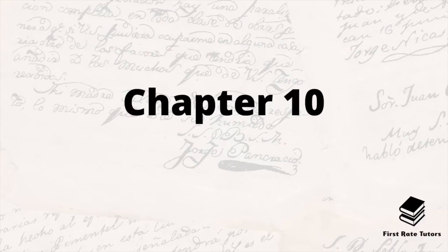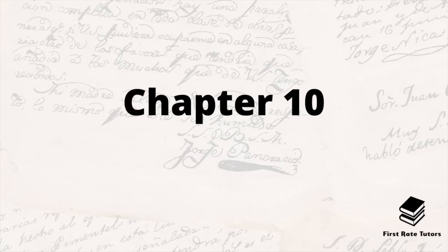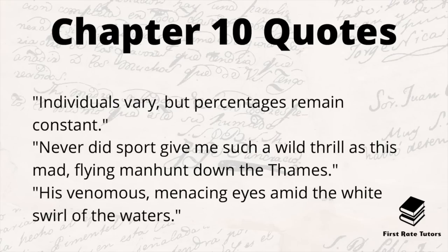Chapter ten, The End of the Islanders, sees the three men set off after dinner in a police launch in pursuit of the Aurora. Holmes explains that Mordecai Smith must have put the boat in with a repairer to hide it while the men made arrangements to escape abroad. Having located the shipyard they follow the Aurora as it speeds away, spotting Jonathan Small at the stern along with his small companion Tonga. When Tonga raises a blowpipe to his lips, Holmes and Watson both shoot him and he falls into the river. Small jumps off the boat onto the muddy banks but his wooden leg sinks into the sodden soil and he and the Smiths are captured. Holmes and Watson locate the treasure chest and notice a murderous dart, realising how close to death they had been. Key quotes: 'individuals vary but percentages remain constant'; 'never did sport give me such a wild thrill as this mad flying manhunt down the Thames'; and 'his venomous menacing eyes amid the white swirl of the waters.'